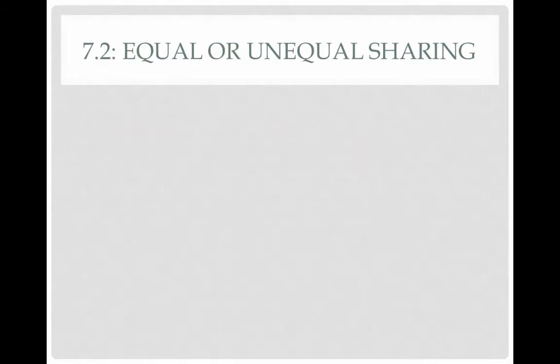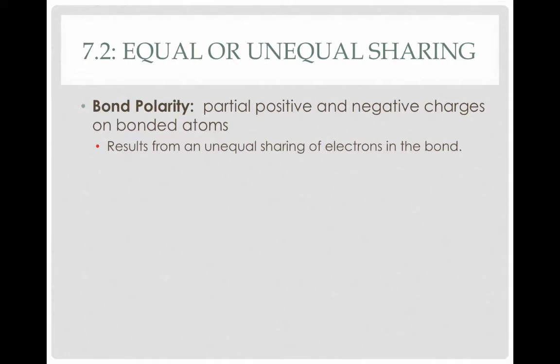Turning to bond polarity—recall that covalent bonds involve a sharing of a pair of electrons. Previously we've been assuming that sharing was equal, but it turns out that often the sharing is unequal. For instance, if I agree to share a car with my brother and we each get it the same number of days, we're equally sharing. However, if I have the car five days a week and he only gets it two days, that's an unequal sharing. This is true of bonds as well, and it results in bond polarity—a partial positive and partial negative charge on bonded atoms, resulting from an unequal sharing of electrons in the bond.